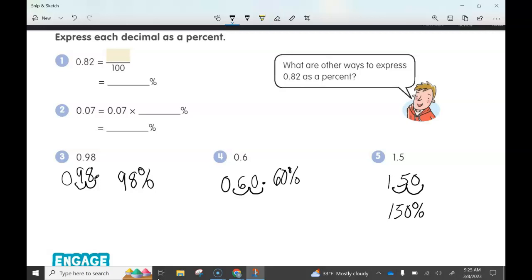Again, decimal to a percent, it's as simple as moving that decimal two places to the right. Wherever it may be, it's two places to the right.